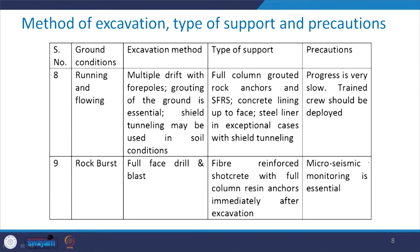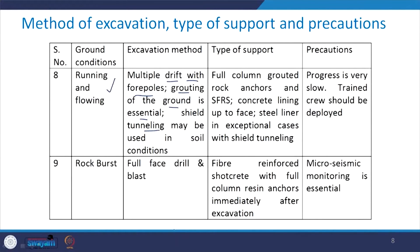The next ground condition includes running and flowing. The excavation method recommended is multiple drift with fore poles. Grouting of the ground is essential in this case. Shield tunneling may be used in soil conditions. Full column grouted rock anchors and SFRS are recommended as support. Concrete lining up to the face and steel liner should be provided in exceptional cases with shield tunneling. Progress is very slow, and trained crew should be deployed for construction activity in running and flowing ground conditions.